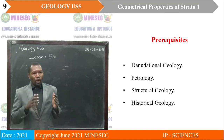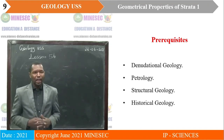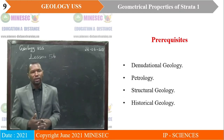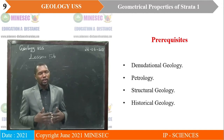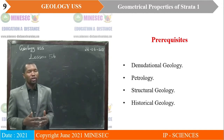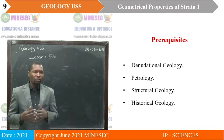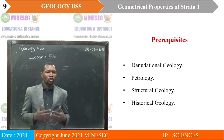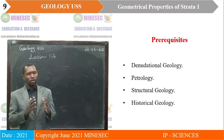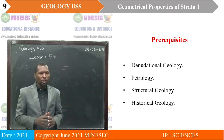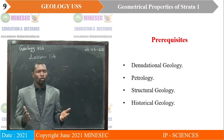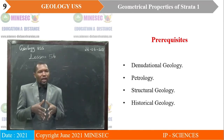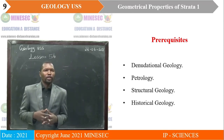As prerequisites, we need information on denudational geology — those processes involving the wearing away of materials on the earth's crust. We also require information on petrology, that is, the different rock types including their structures, mineralogy, texture, origin, nature, rock occurrences, and their relationships. We will also require information on structural geology as well as historical geology, which involves map work, paleontology, and stratigraphy. This will help us understand geometrical properties of strata 1.